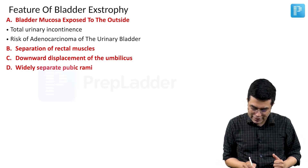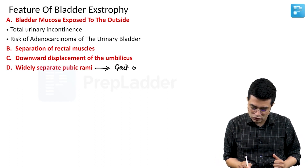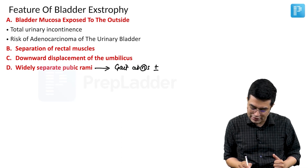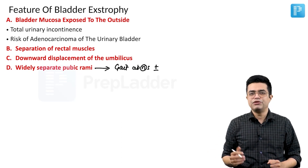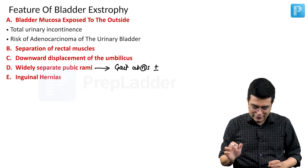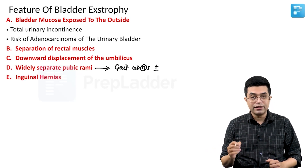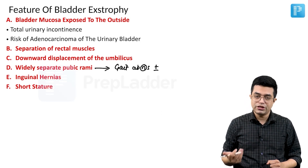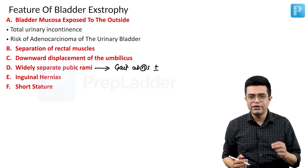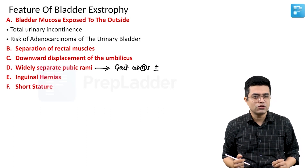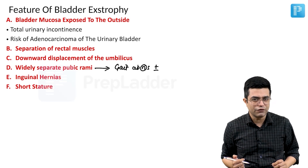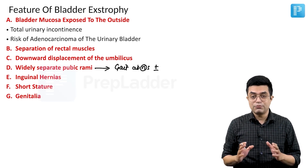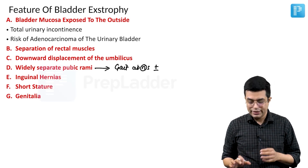Many of these patients may have manifestations like gait abnormalities, so a wide-based gait may or may not be present, but no other specific feature will be seen because of this. Inguinal hernias will be common in these patients. There will be short stature — most of these children are found to have height for age below minus 2 standard deviations of the mean. Genitalia abnormalities obviously will also be present.